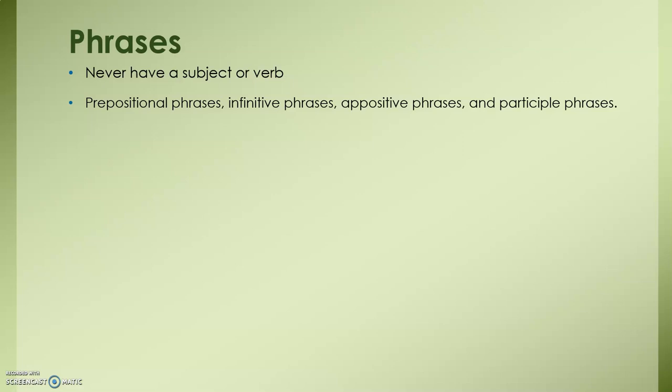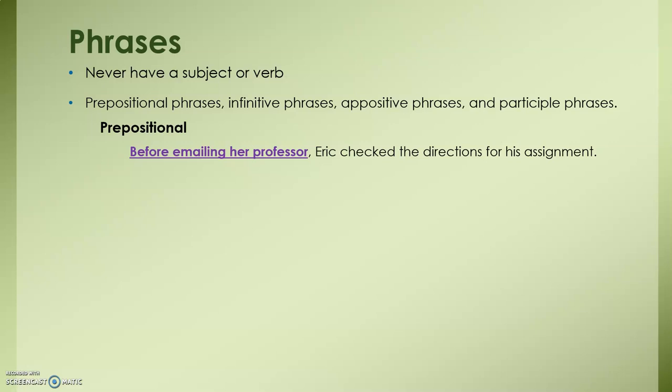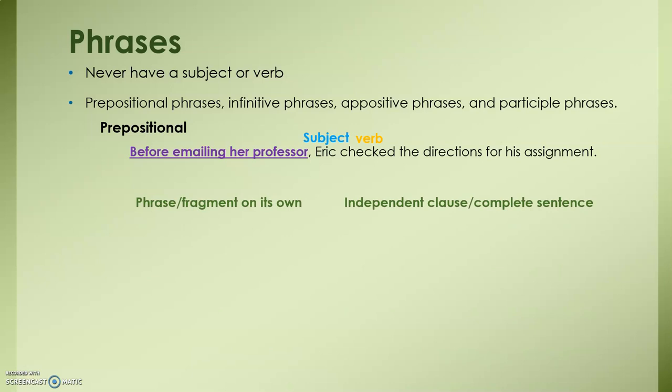Here we have a sentence starting with a prepositional phrase: 'Before emailing her professor, [comma] Eric checked the directions for his assignment.' On the right-hand side of that comma, we have our subject, Eric, and our verb, checked. On the left-hand side, 'before emailing her professor,' we have a phrase that would be a fragment on its own. On the right-hand side, we have what would be a complete sentence, which is why we can put that comma to split the two up.